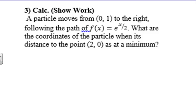The first one is where a particle moves from (0, 1) to the right, following the path of f(x) = e^(x/2). What are the coordinates of the particle when its distance to the point (2, 0) is at a minimum?